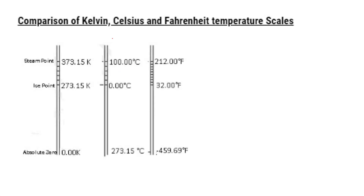Comparing Kelvin, Celsius, and Fahrenheit temperature scales: at 0°C, it is 32°F or 273.15 K — these are the ice points. At 100°C, it is 212°F or 373.15 K — these are the steam points. This is how the conversions between the three scales work.